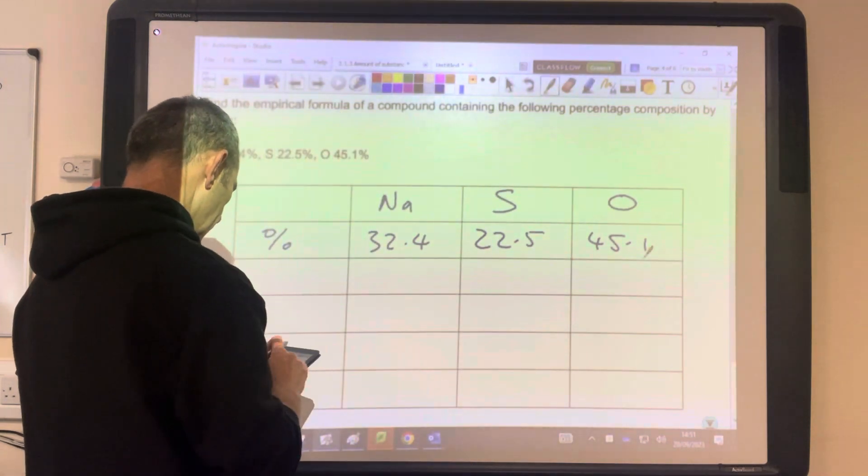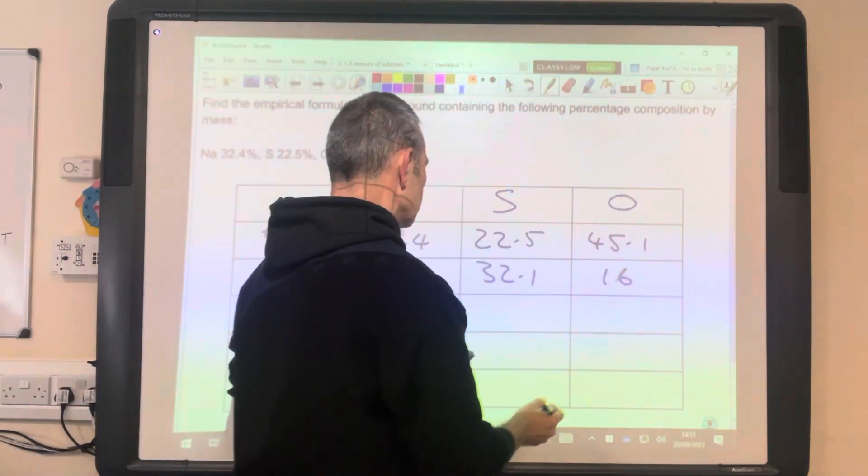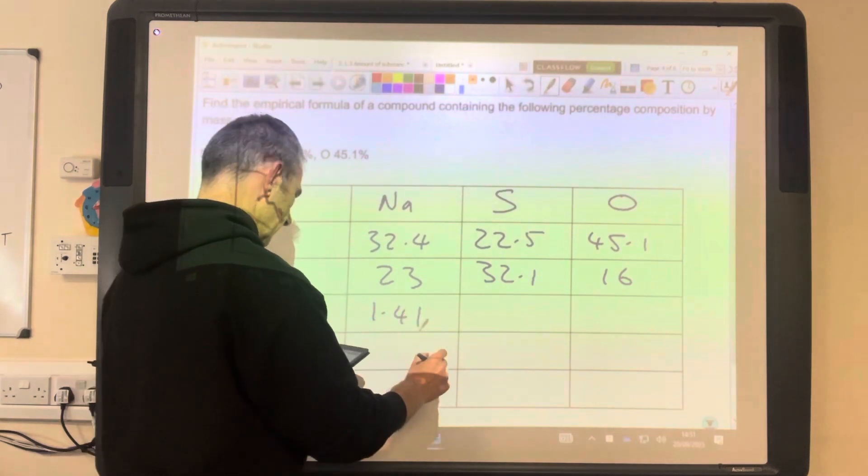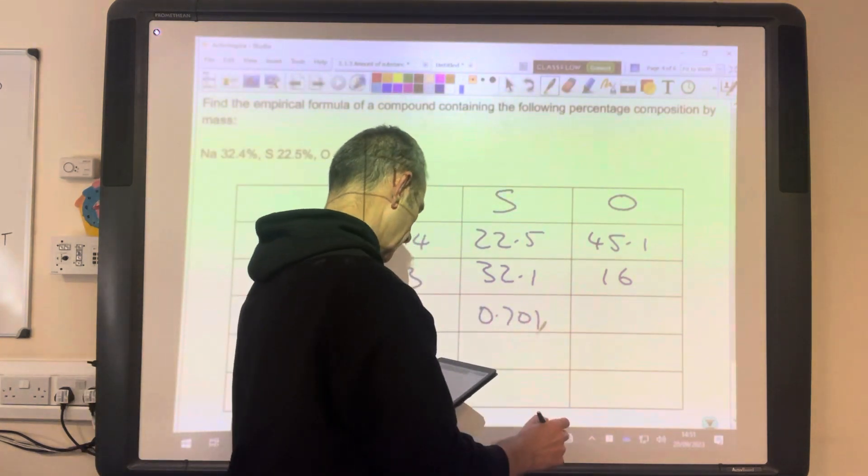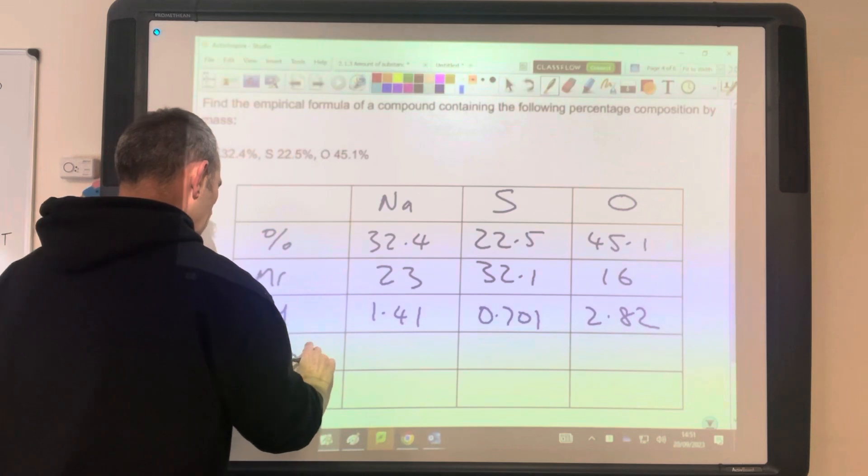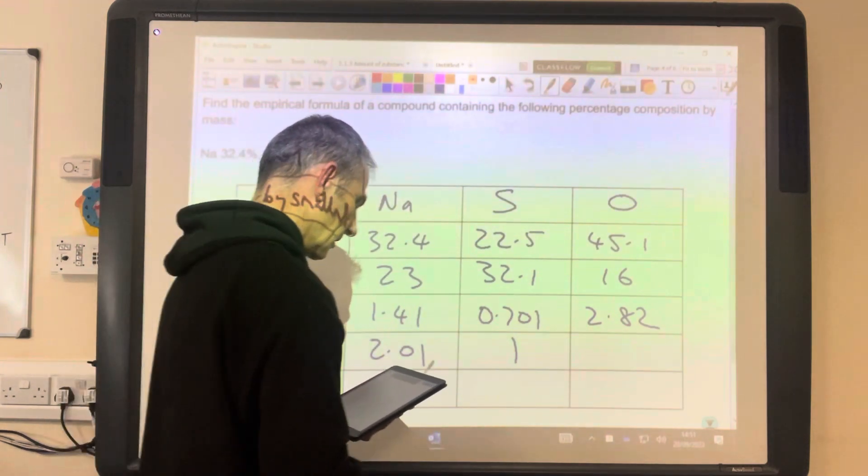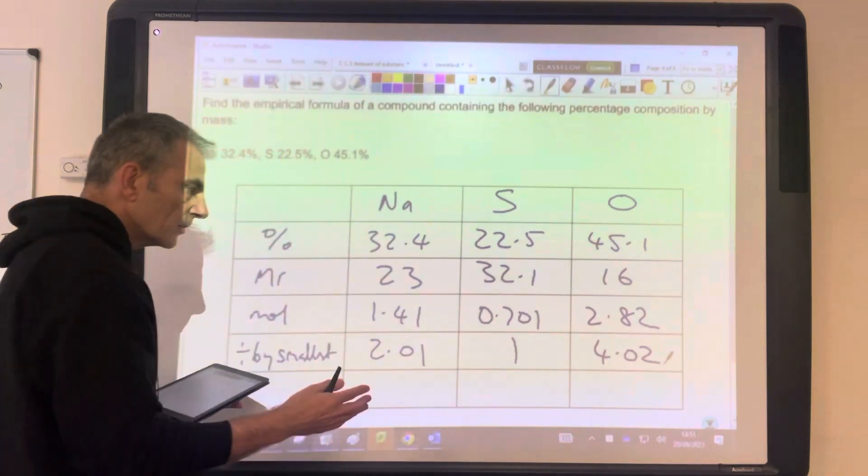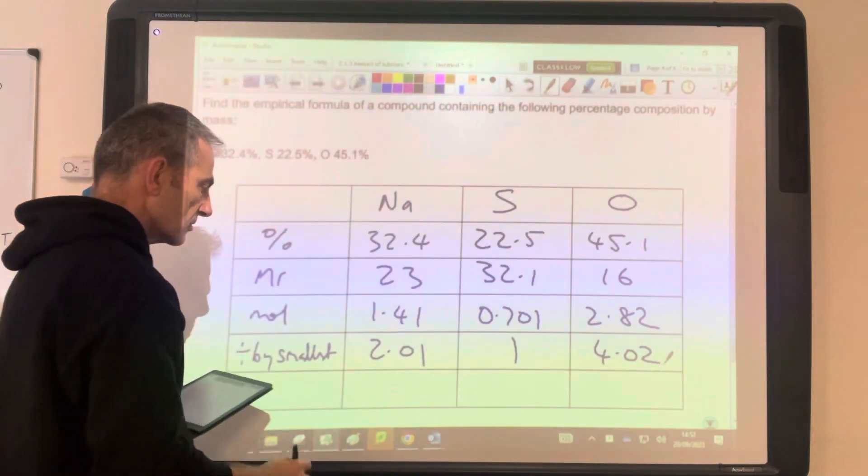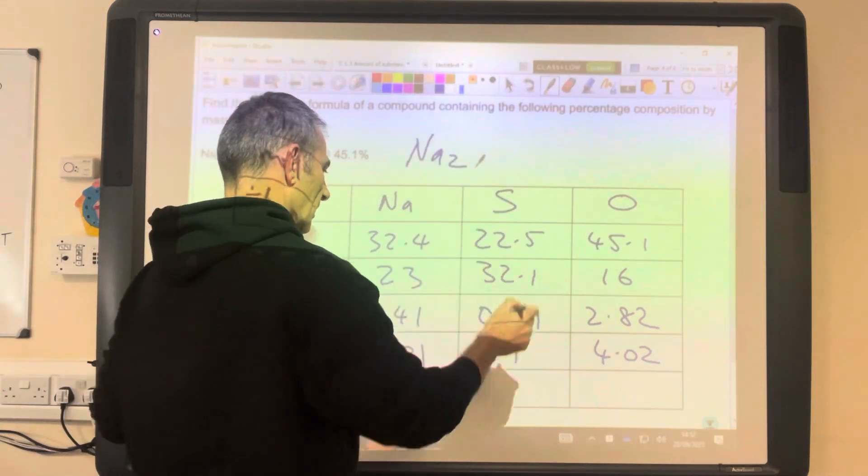And we divide by the MRs. So we'll put the MRs in, 23, 32.1, 16. So that's going to give us the moles. To three significant figures, 1.41, 0.701, 2.82. Divide by the smallest to get the ratio. So the smallest is obviously that. There's your 1. So this comes out with 2.01. And this comes out with 4.02. So hopefully you'll appreciate that that's so close to 2, we can say it's 2. That's so close to 4, we can say it's 4. So we don't need this line. We're not needing to multiply this out. So the empirical formula is Na2SO4.